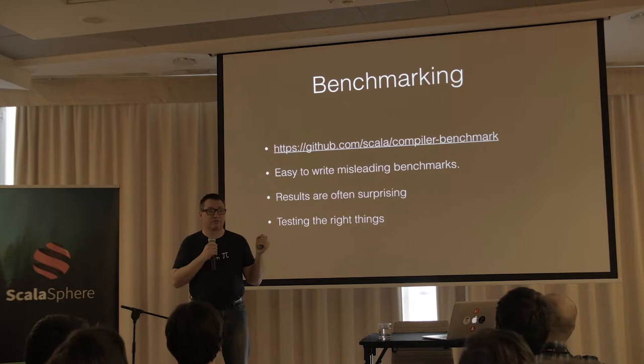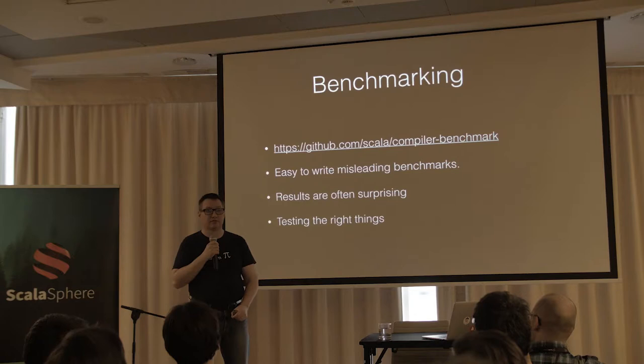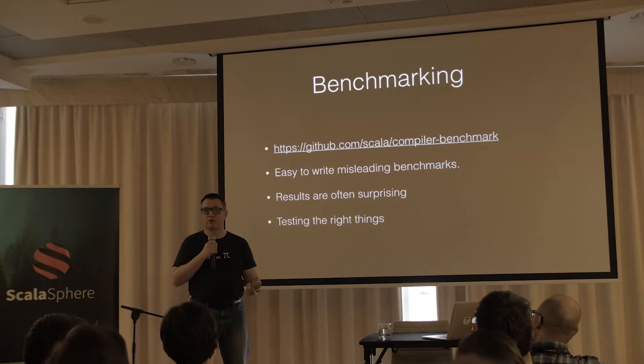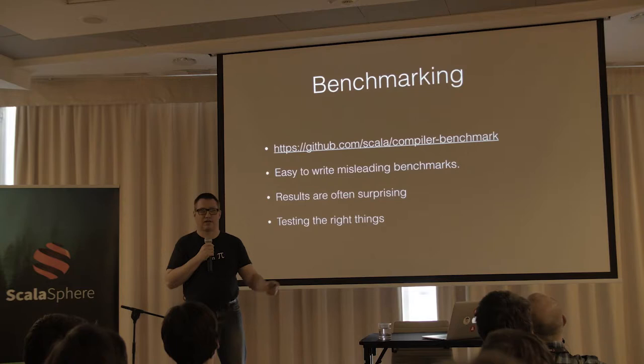Map.contains used to be implemented as map.get.isDefined, which creates an Option every single time you call it — in terms of performance, it's horrible. But the truth is nobody called contains in Scala, because that's not the way we write code. We always write x.get match blah. So whilst in the benchmark it looks really good — like 50 times faster — in reality it makes no difference to any project you care about.